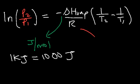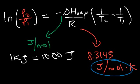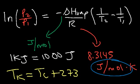R is the energy constant 8.3145, with units joules per mole per Kelvin — that's why delta H has to be in joules per mole. T is the Kelvin temperature, not Celsius. To convert to Kelvin, simply add 273 to the Celsius temperature.